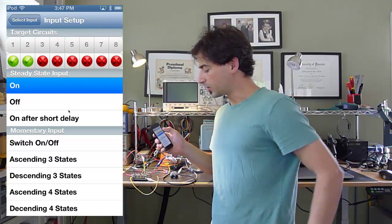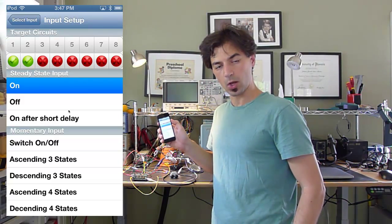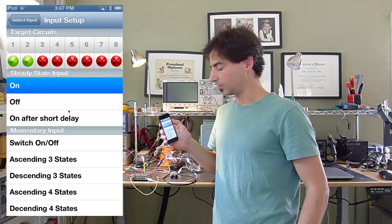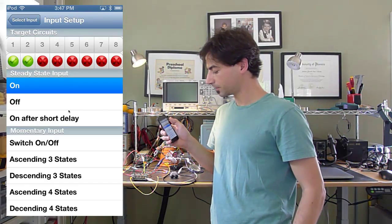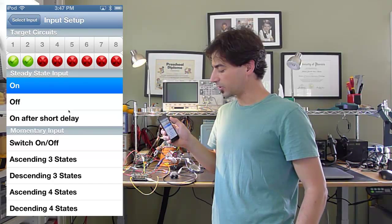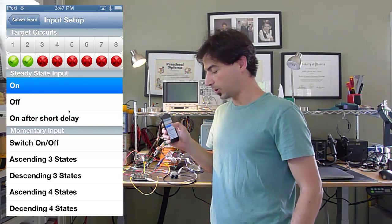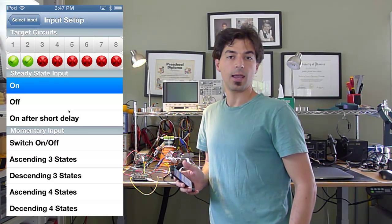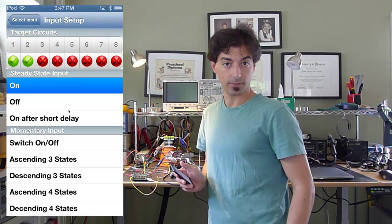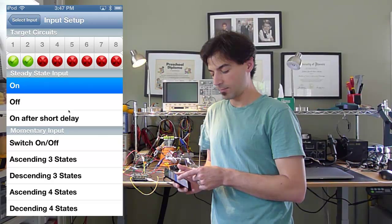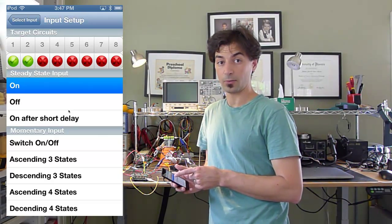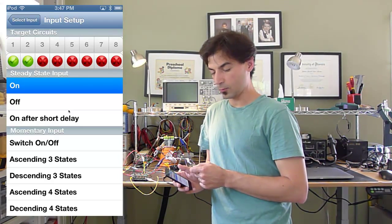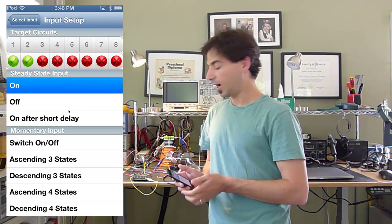It's currently set up to turn on outputs 1 and 2, as you can see by the green ball under the numbers 1 and 2. The function is a steady state input, and it will turn it on. The expectation here is that the signal will always be on, and when it's no longer on, it will do the opposite. When input 3 is grounded, it will turn the lights on, or those circuits on. And when it's floating, it will turn them off. Let's try it out.